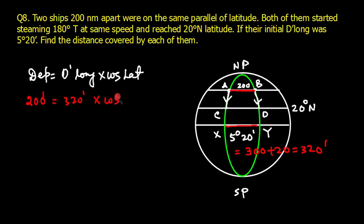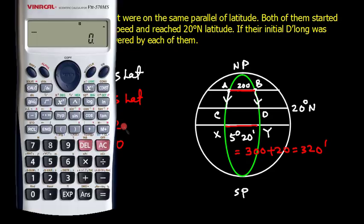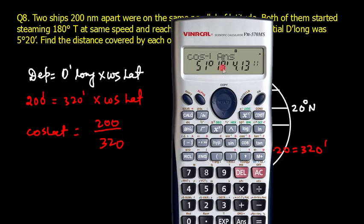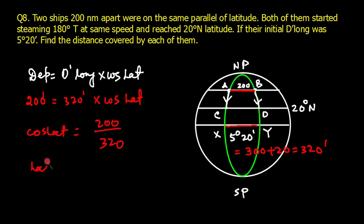Solving for latitude: cos(Latitude) = 200 ÷ 320 = 0.625. Taking the inverse cosine: cos⁻¹(0.625) = 51.317°, which converts to 51°19.1'. So the initial latitude is 51°19.1'N.